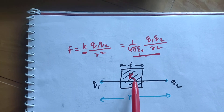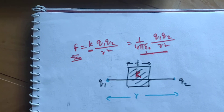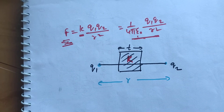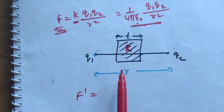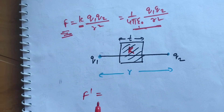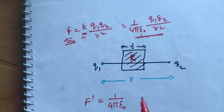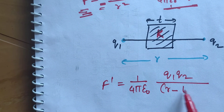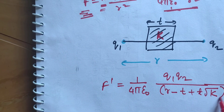When you introduce a dielectric medium of thickness T, this force will change. In that case, we have a shortcut formula: F' = 1/(4πε₀) × Q1Q2 / (R − T + T√K)², where capital K is the dielectric constant.